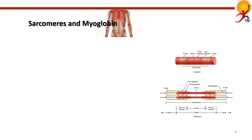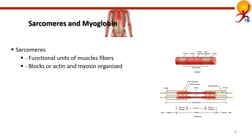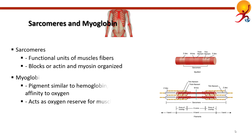Sarcomeres are the functional unit of muscle fibers. Within them, blocks of actin and myosin molecules are placed in an organized manner. Sarcomeres are the contractile units of muscle tissue, formed of alternating actin blocks (thin filaments) and myosin blocks (thicker filaments). Myoglobin is a pigment similar to hemoglobin with a large affinity for oxygen. It is present in muscle fibers and keeps oxygen bound, releasing it under strenuous muscle work. Therefore myoglobin acts as an oxygen reserve for muscles.